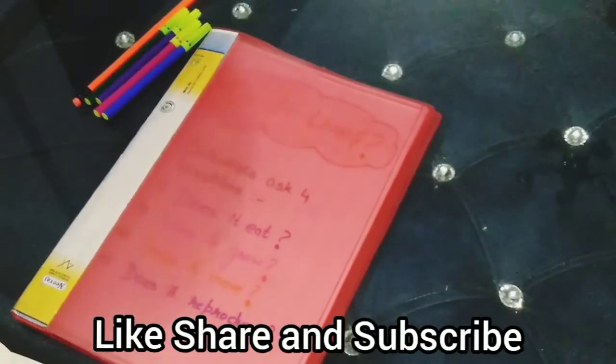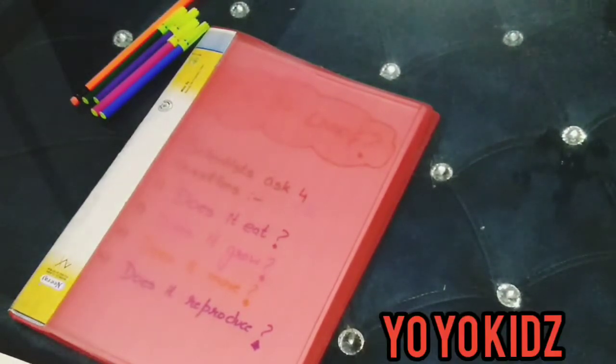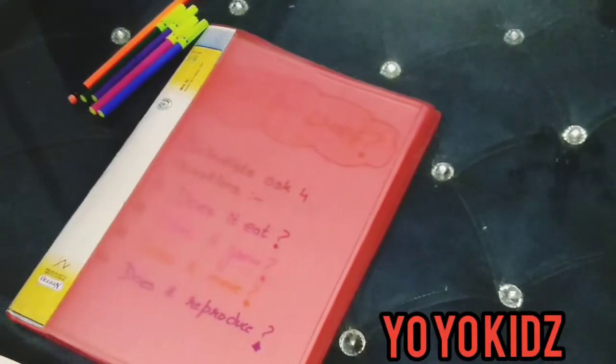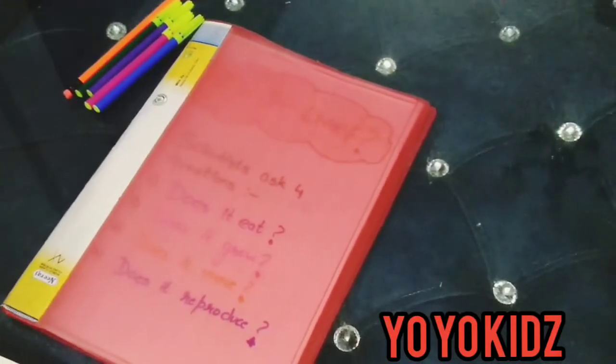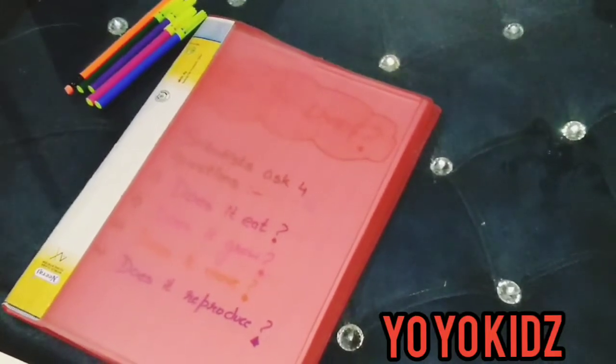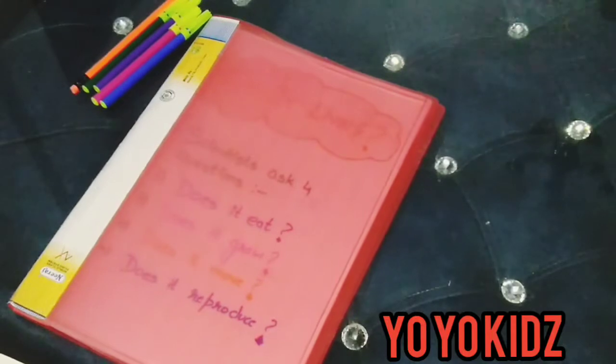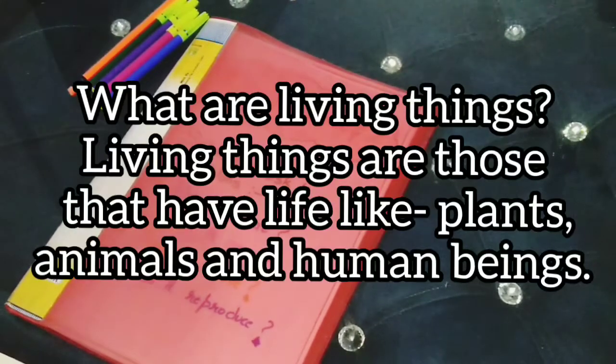So, are you all excited to understand this new concept? Alright, let's start. If you see around yourself, there are so many things, right? We can categorize all these things into living or non-living things. It means everything around us is either living or non-living. Very good. Now, the question arises, what are living things and what are non-living things?